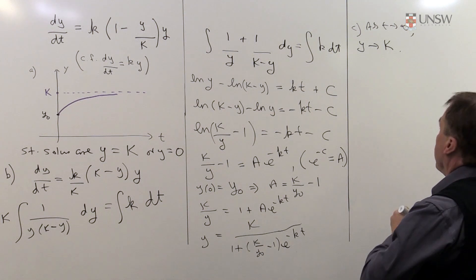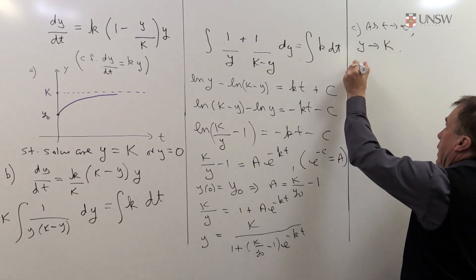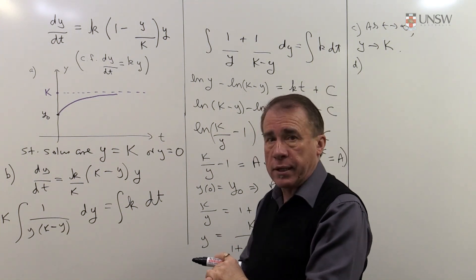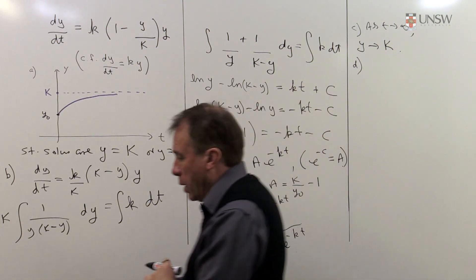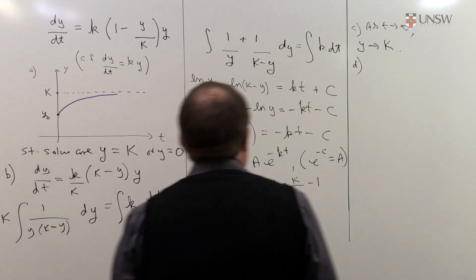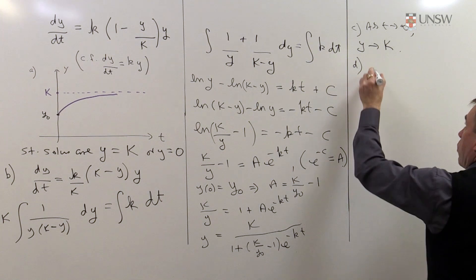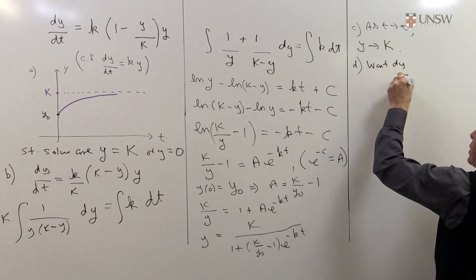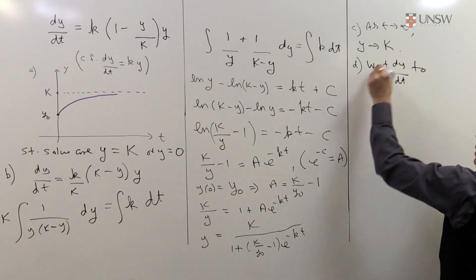The next part of the problem, part d, asks you the question, well, what value of y makes the growth rate a maximum? What value of y makes the rate of increase a maximum? So we want dy/dt to have a maximum.